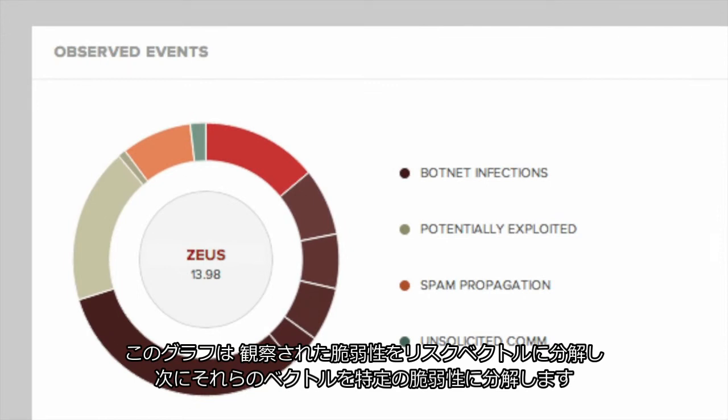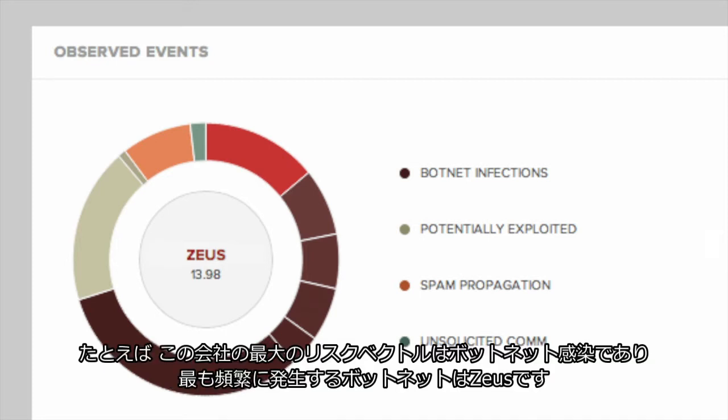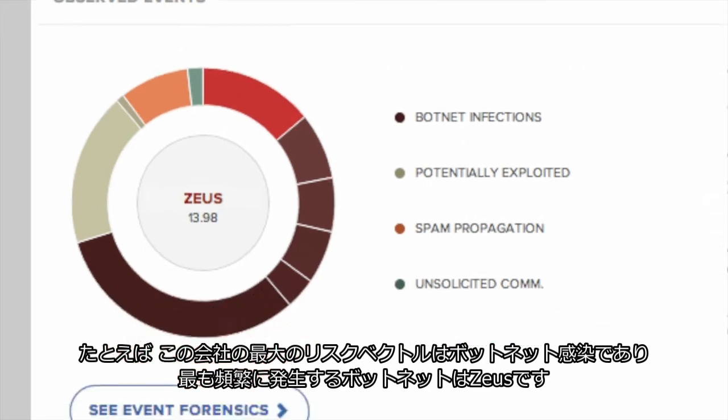This graph breaks your observed vulnerabilities into risk vectors, then breaks those vectors down into specific vulnerabilities. For example, this company's largest risk vector is botnet infections, and the most frequent occurring botnet is Zeus.